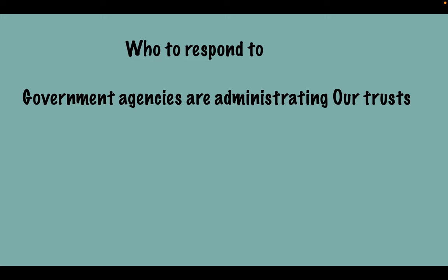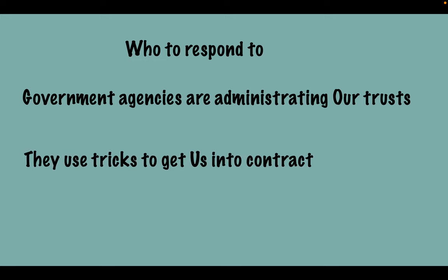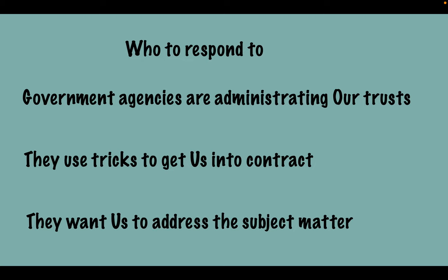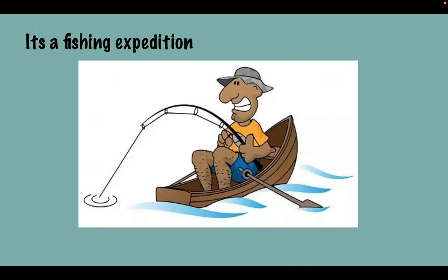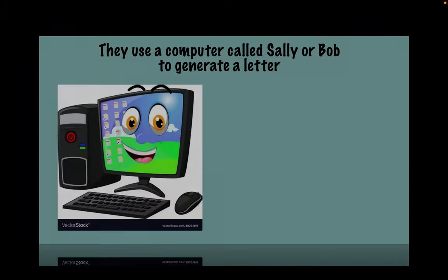Government agencies are only administrating our trust, and they use agents to administer our trust. If the agents get us into contract then they get a commission by making money for the trust. They use little tricks to get us into contract — they want us to address the subject matter, and most of the time people fall for that. But if you realize that's only a fishing expedition to see how we respond, knowing how we respond will avoid any so-called claim they have against us.